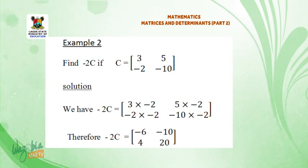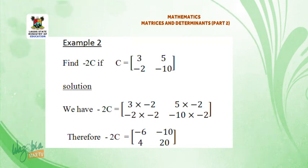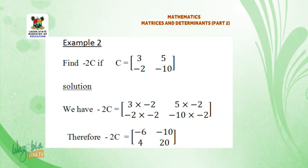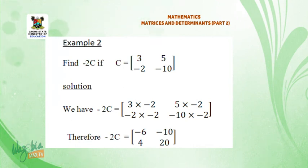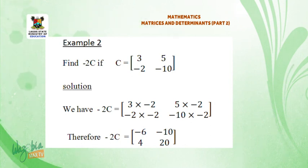Example 2. Find minus 2C, if C is equal to the matrix: 3, 5, minus 2, minus 10. Solution: we have minus 2C equal to the matrix: 3×(minus 2), 5×(minus 2), (minus 2)×(minus 2), (minus 10)×(minus 2). Therefore, minus 2C is equal to the matrix: minus 6, minus 10, 4, 20.